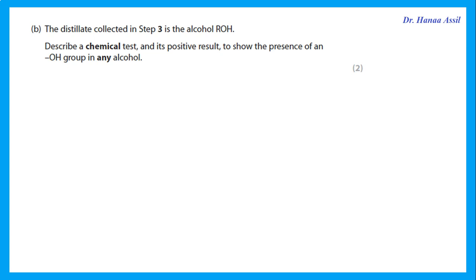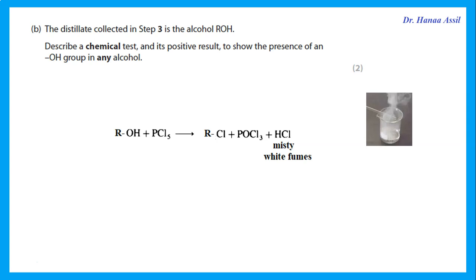The distillate collected is the alcohol ROH. To confirm the presence of an alcohol: add phosphorus pentachloride (PCl₅) — steamy/misty white fumes of hydrogen chloride are produced. This is a positive test for the OH group in alcohols or carboxylic acids.